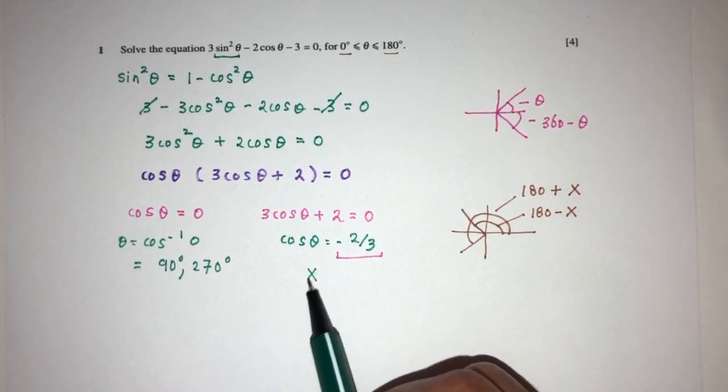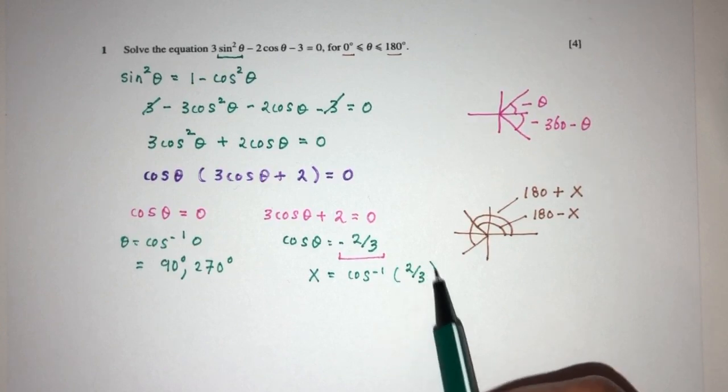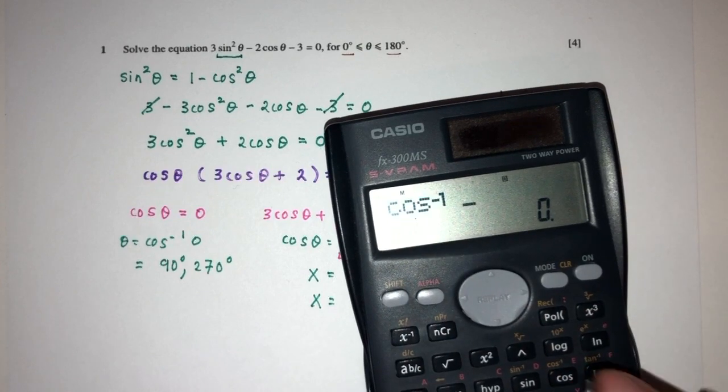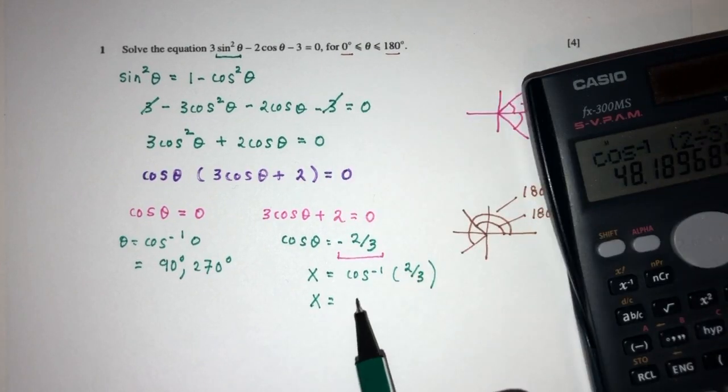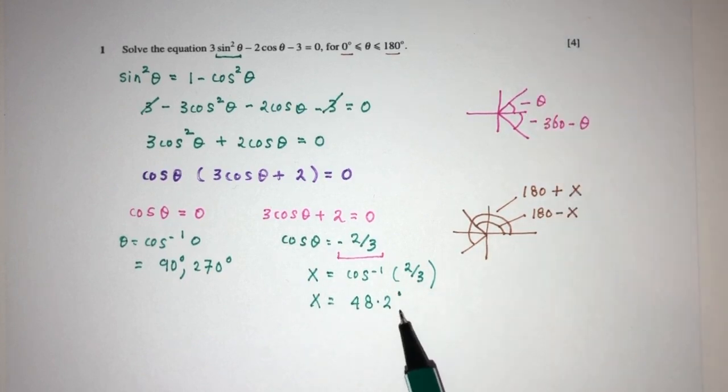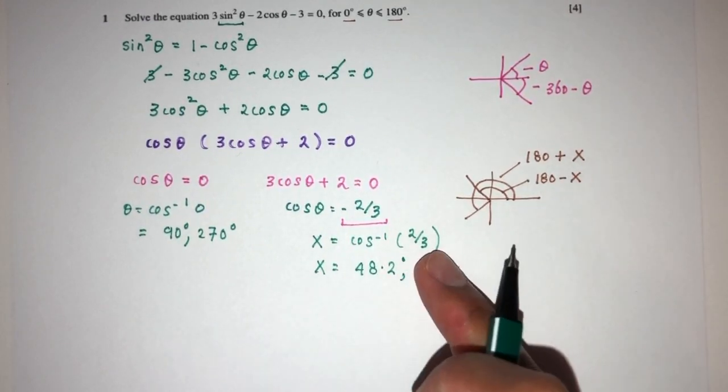So, to find x first, that will be cos inverse of the positive value of this. So x will be cos inverse of 2 over 3, that should be 48.2 degrees. Now, this is the value of x for this one, when it is positive.